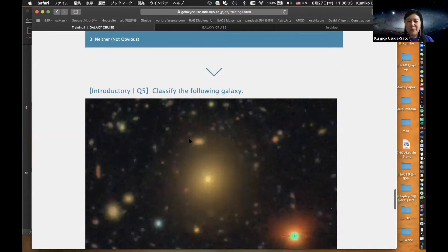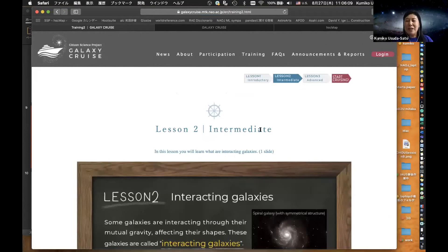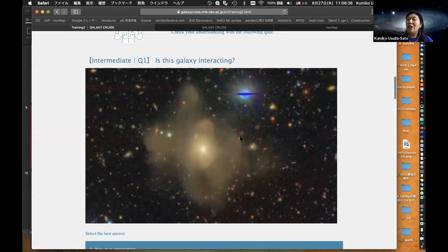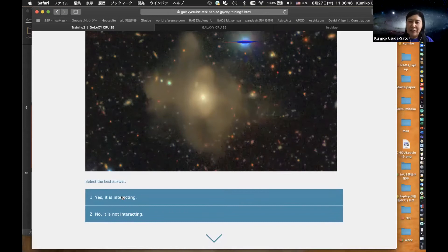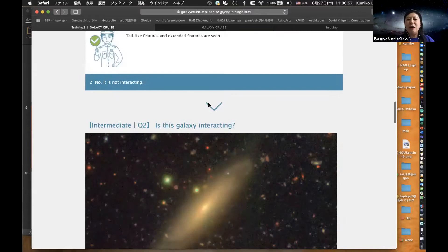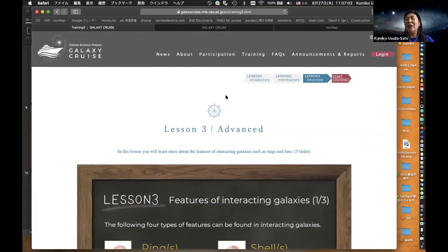After you finish answering all five questions, please click go to lesson two. In lesson two, you will learn what is an interacting galaxy. This is a symmetrical spiral pattern without interaction, but interacting galaxies are partially pulled out by gravity of another galaxy or partially distorted. You have another five questions. Look at this picture taken by the Subaru telescope. Is this galaxy interacting or not interacting? Yes, it is interacting. You see many tail-like features—these are features of interaction.